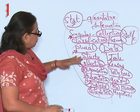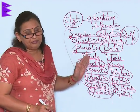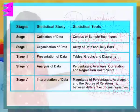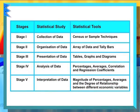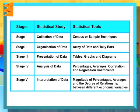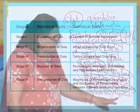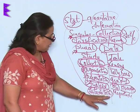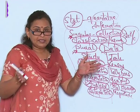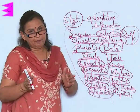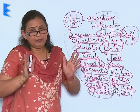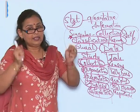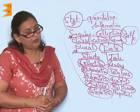Just remember that in the making of statistical data, I am collecting, organizing, presenting, analyzing, and then interpreting. And the tools can be the census, the tally bars, the graphs, the percentage, and the magnitude. The magnitude of the economic variables — which we shall be doing in detail later on — simply means the interrelationship of the economic variables, that is the things which generate money for the people.